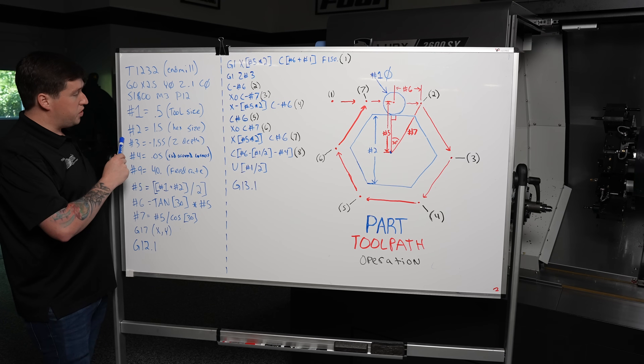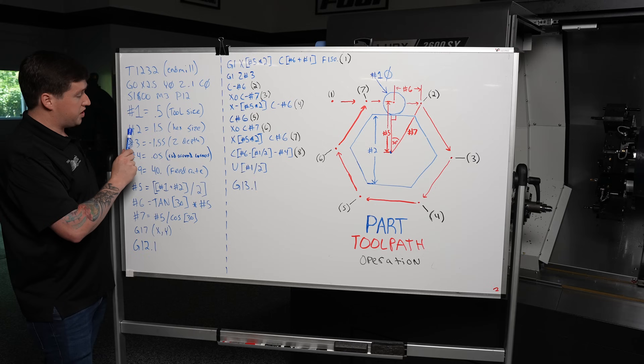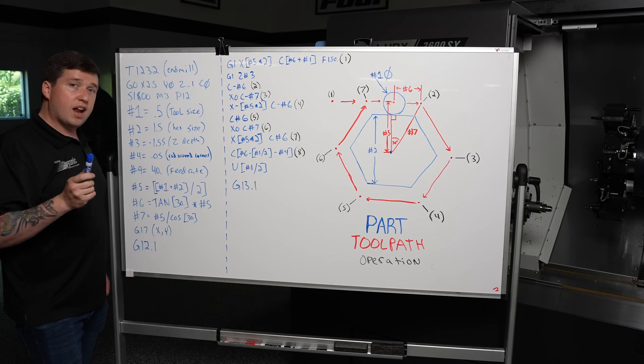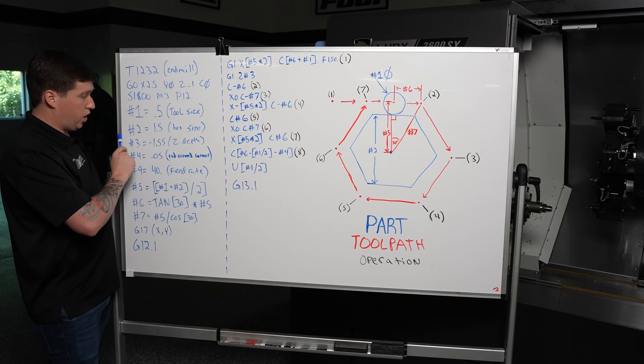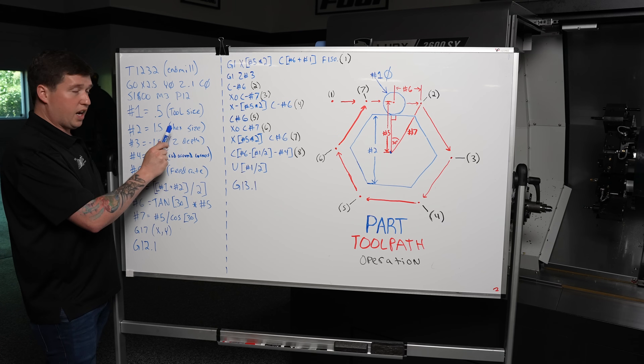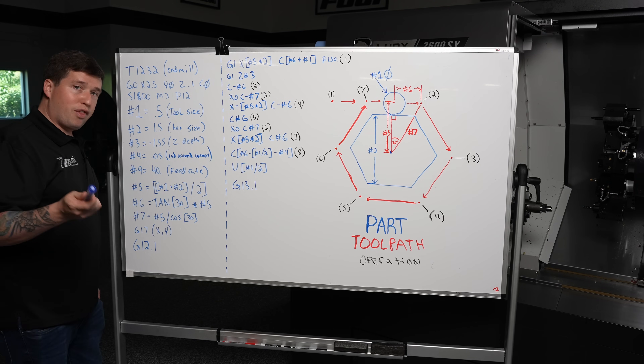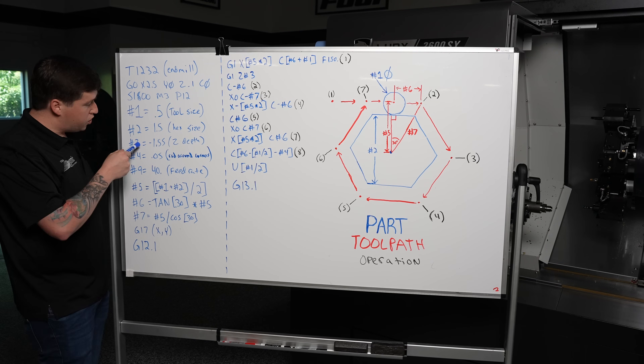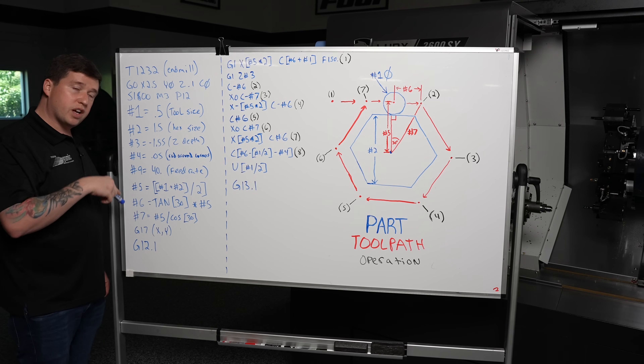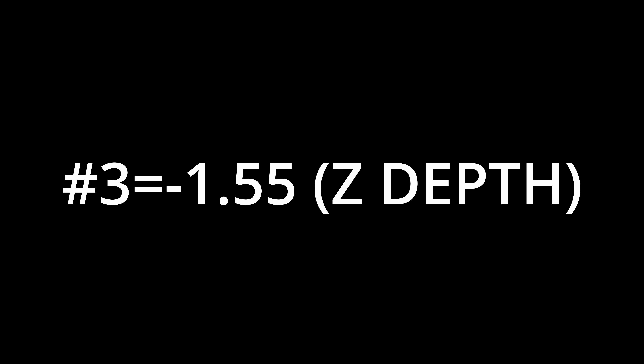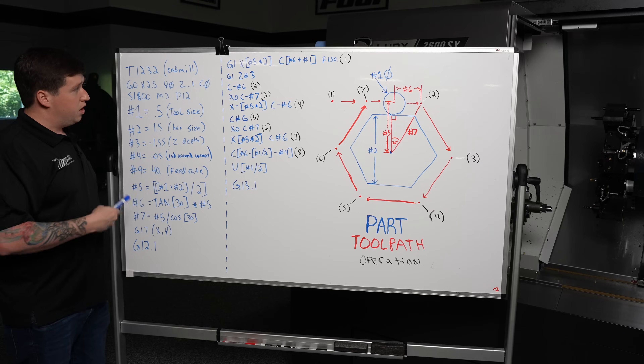Pound one equals 0.5 — this is our tool size, so that is what you're going to put in pound one. Next, you're going to say your hexagon size: pound two equals 1.5. This is the hexagon size of the part I showed you earlier. After that, moving on to pound three: pound three equals minus 1.55 — that is going to be your Z depth. It's going to rapid to a safety position, and then it is going to feed in to that Z depth.